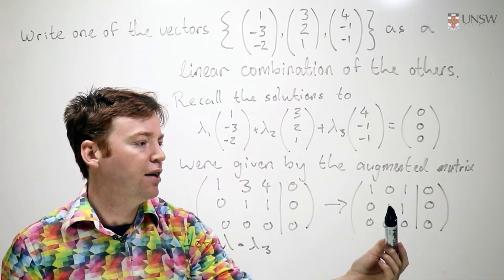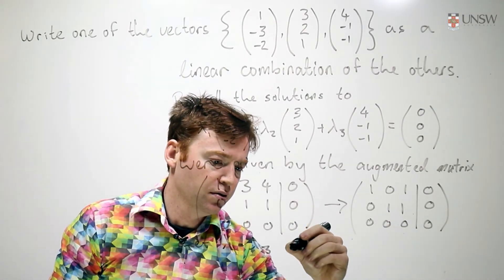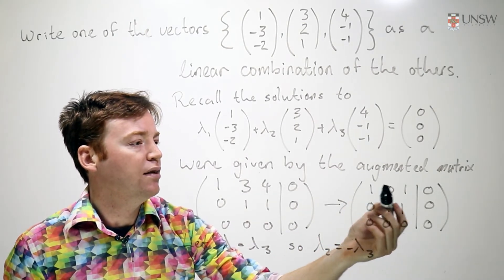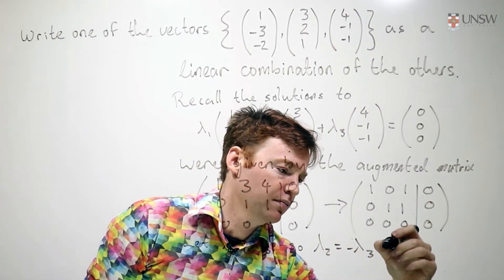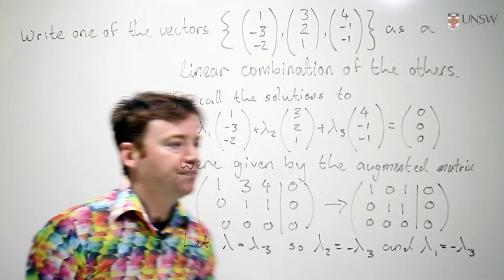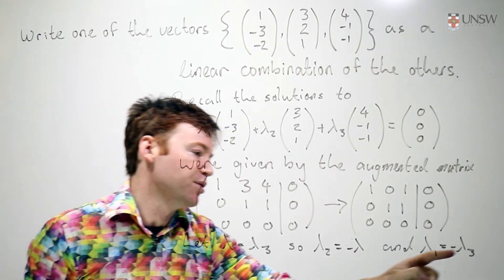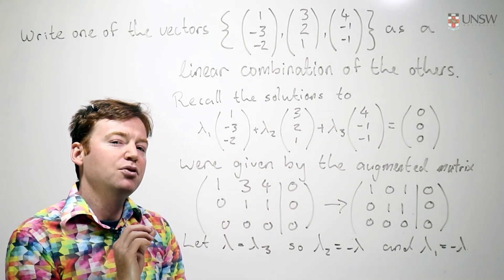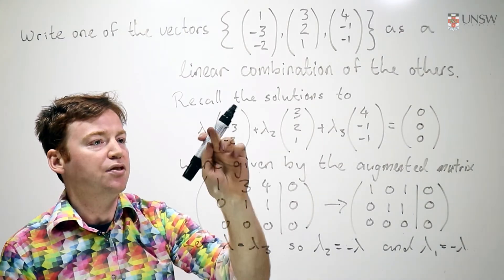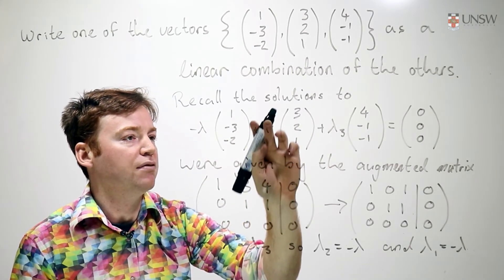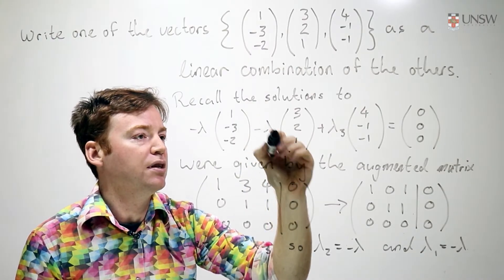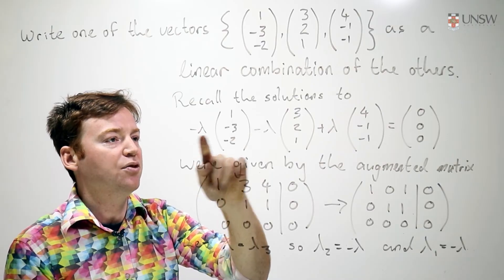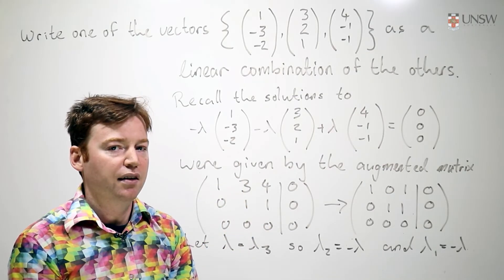From this row in my reduced row echelon form, I know lambda 2 plus lambda 3 equals 0. So lambda 2 is just negative lambda 3. And from this row I know that lambda 1 plus lambda 3 is equal to 0. And so I could actually just omit the 3 here because I've promoted lambda 3 to be the lambda. And I know how to express this equation now as a system with just one variable in it. Lambda 1 is just negative lambda. Lambda 2 is just negative lambda. Lambda 3 is just lambda and it's equal to 0. Behold, my system of equations expressed with the single parameter lambda.